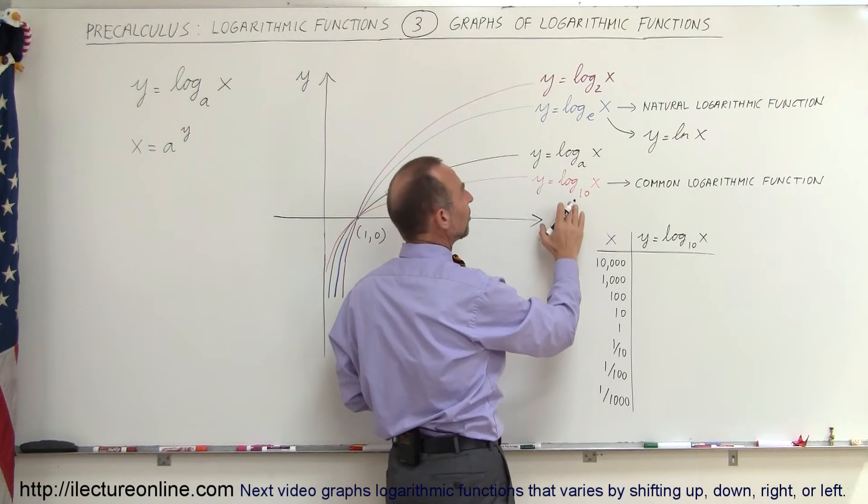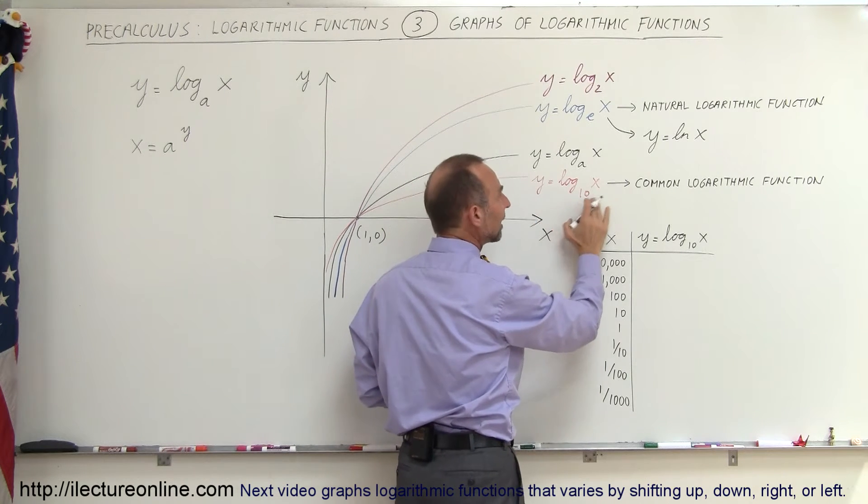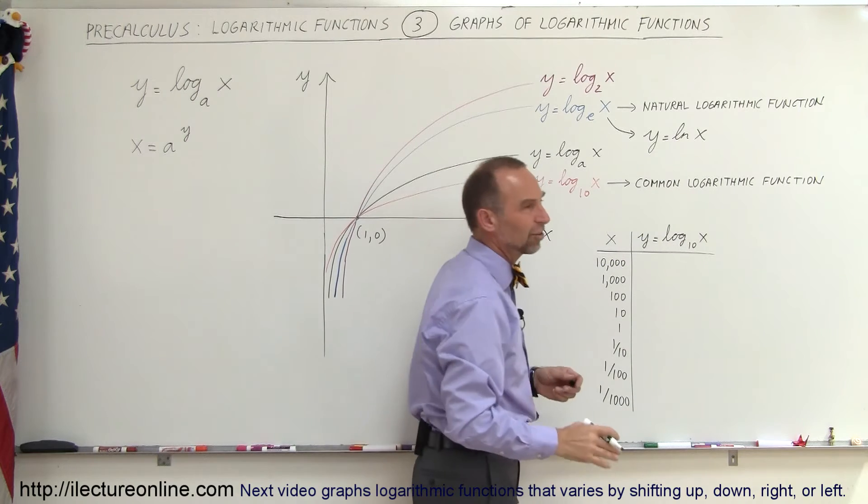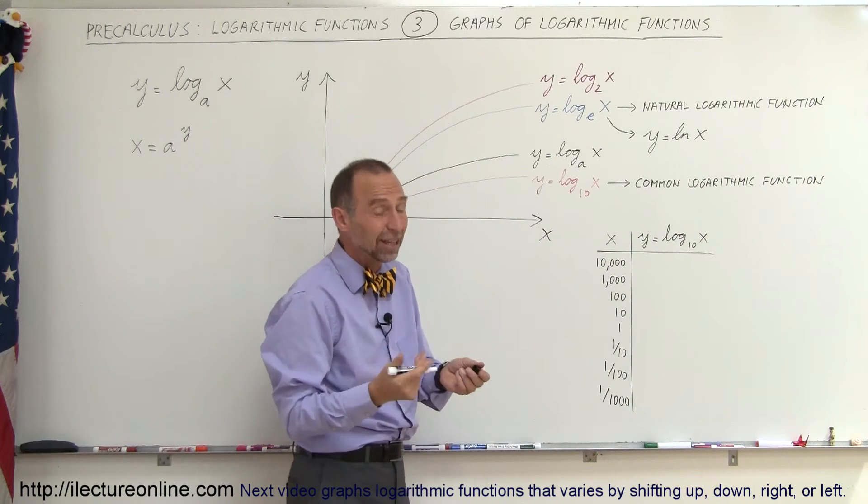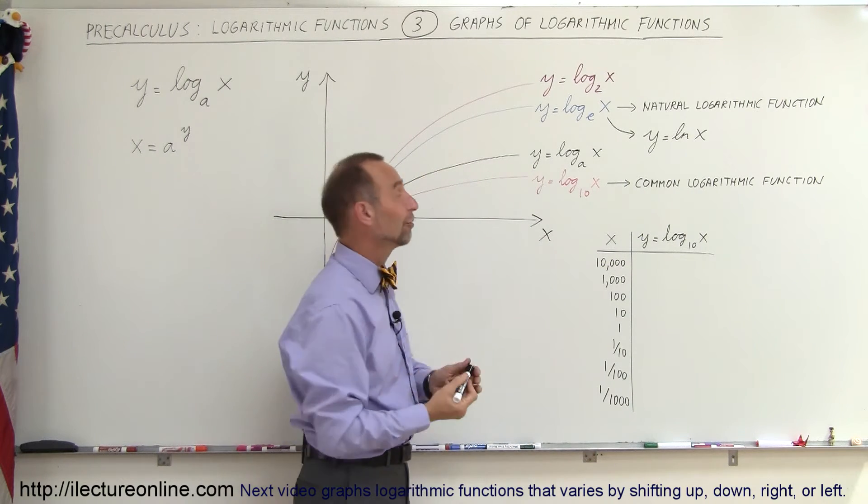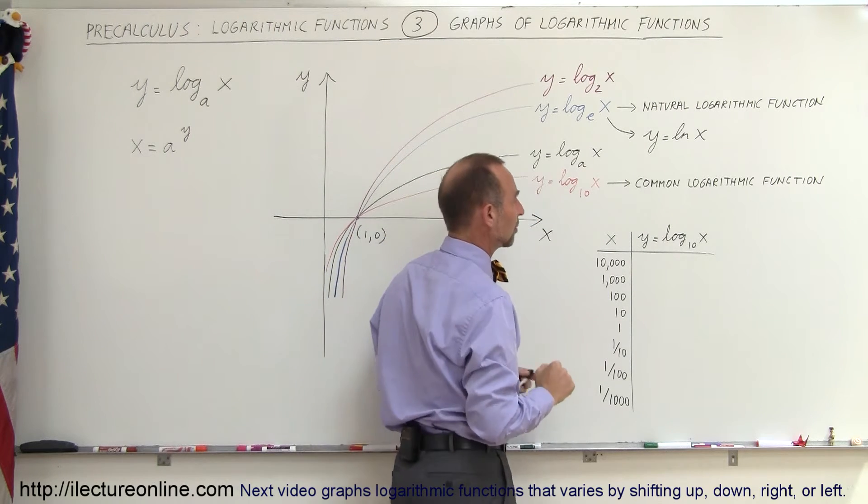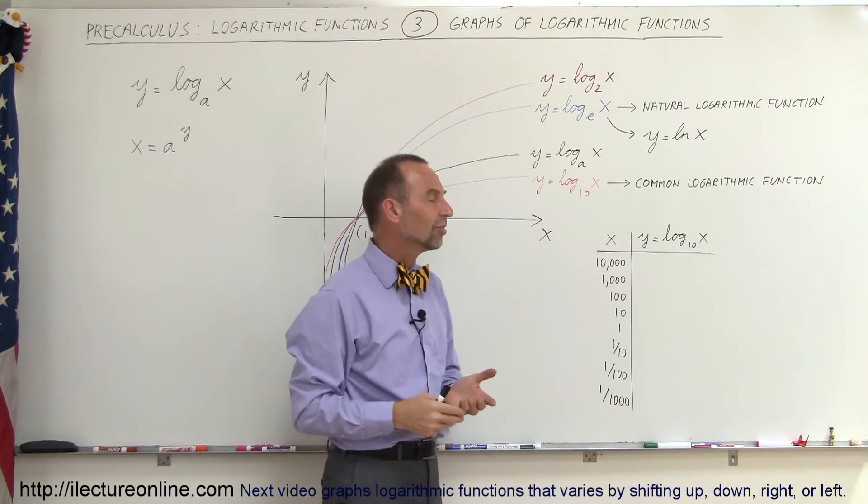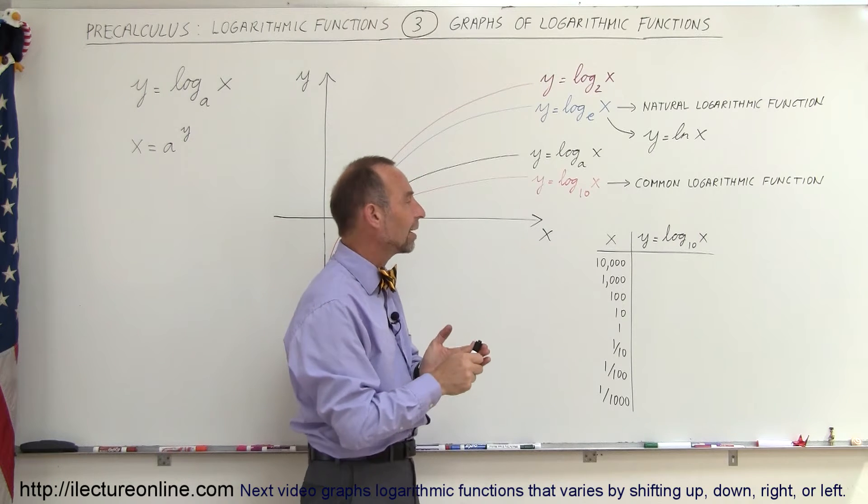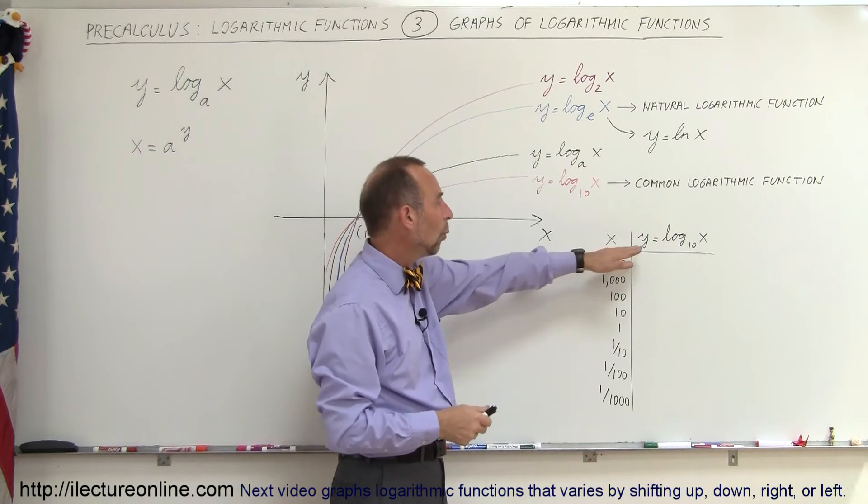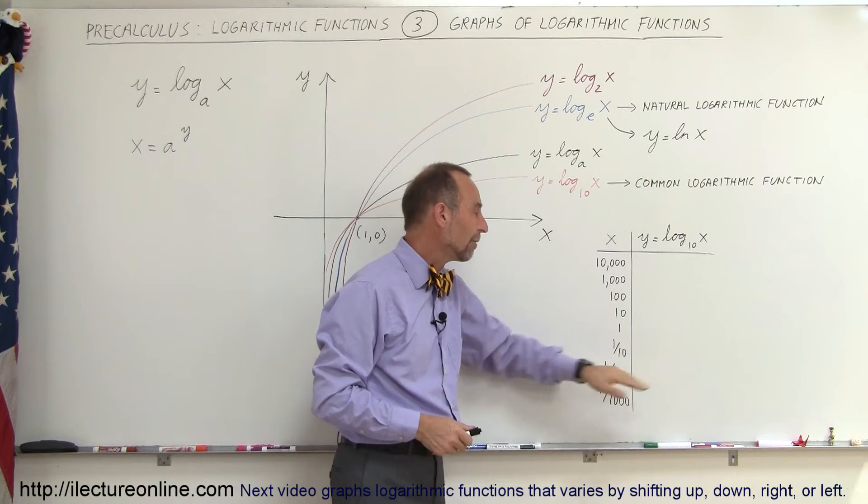The more common function is log to base 10 and that's called the common logarithmic function because in mathematics, everything is base 10 except for the natural functions and so, therefore, they call this the common logarithmic function. So, let's take a look and see what we would get for the values of x and y when we plug a table of values in there.